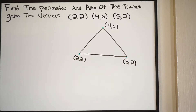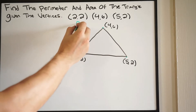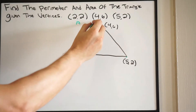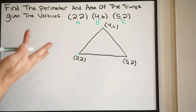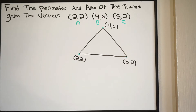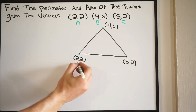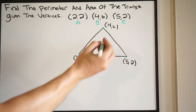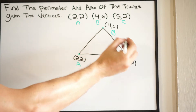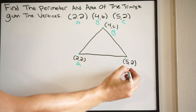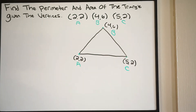What I'm going to do here is label my vertices. I'm going to call this A, B, and C. So we can go ahead and put this on the triangle — this is A, this is going to be B, and this is C. So we have triangle ABC here.